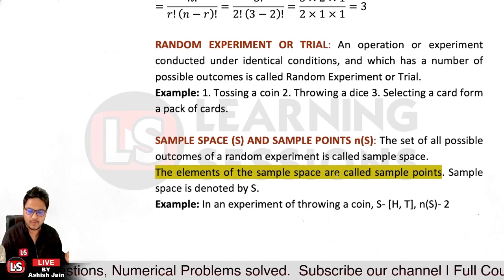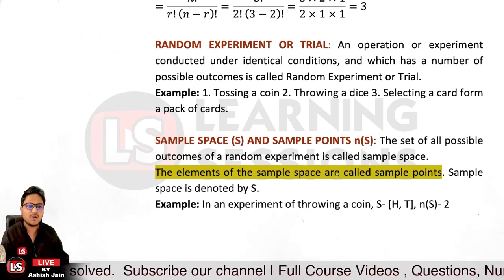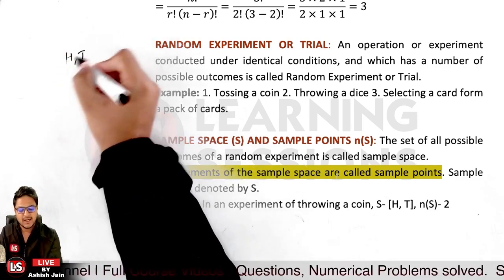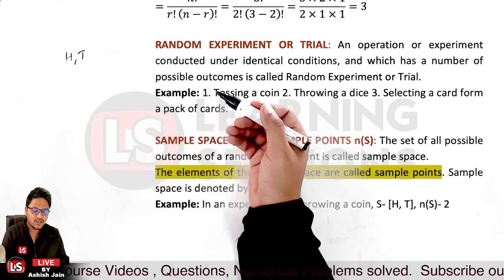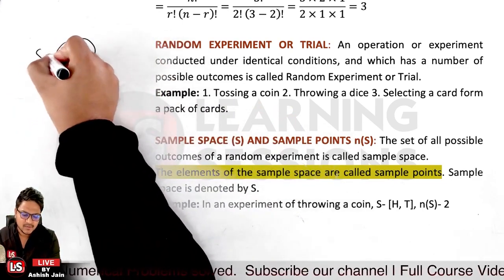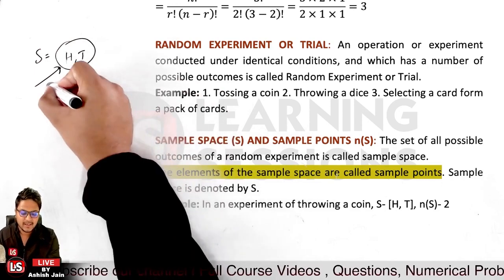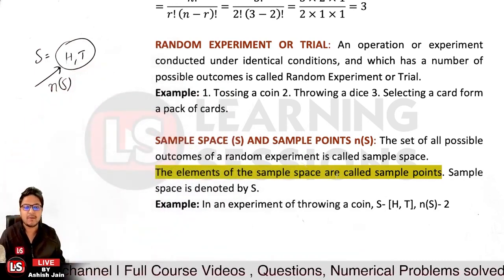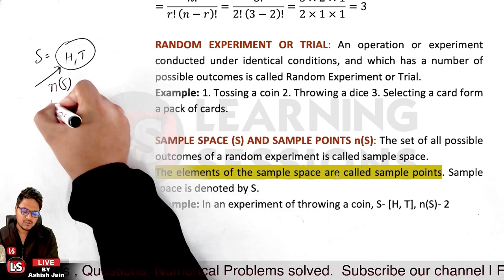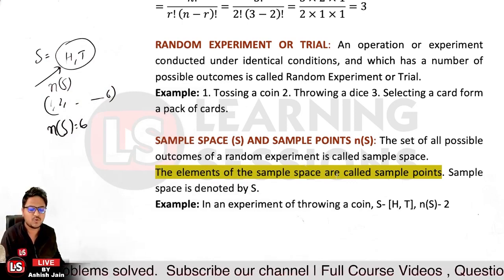After that, it's related to sample space and sample points. Sample space is the set of all possible outcomes of a random experiment. If we toss a coin, the sample space is {H, T}. It is denoted by capital S, and the number of terms in the sample space is denoted by Ns. For example, rolling a dice gives sample space {1, 2, 3, 4, 5, 6} and Ns equals 6.